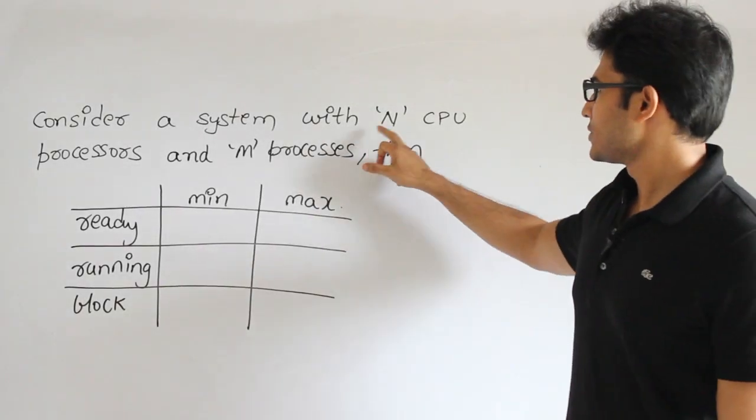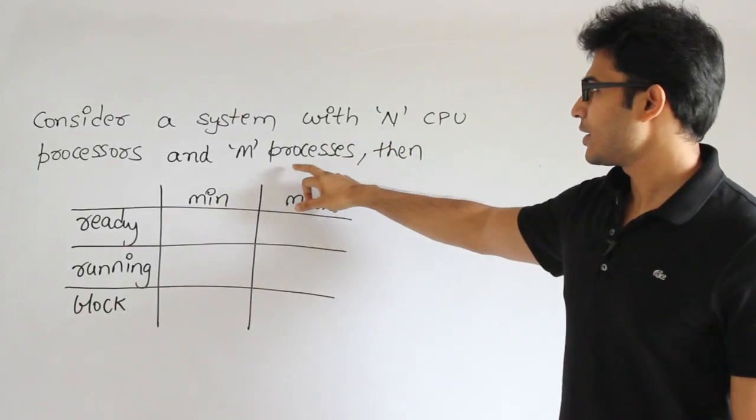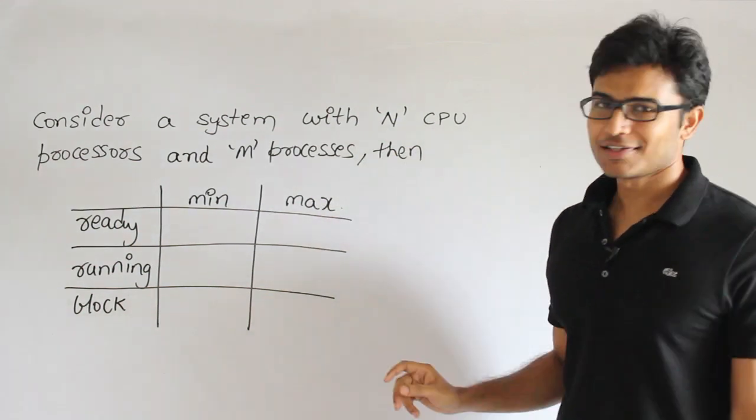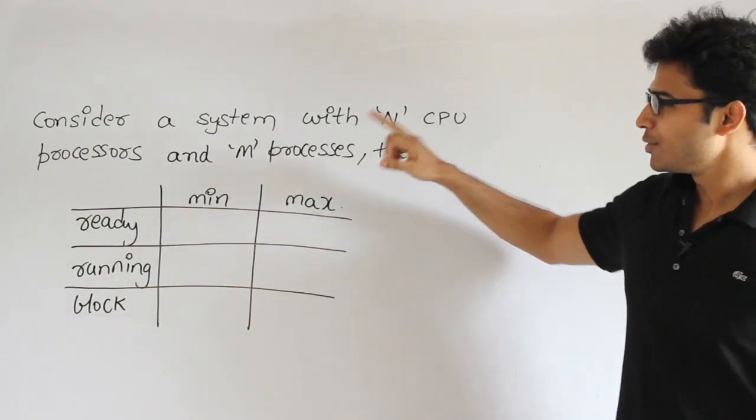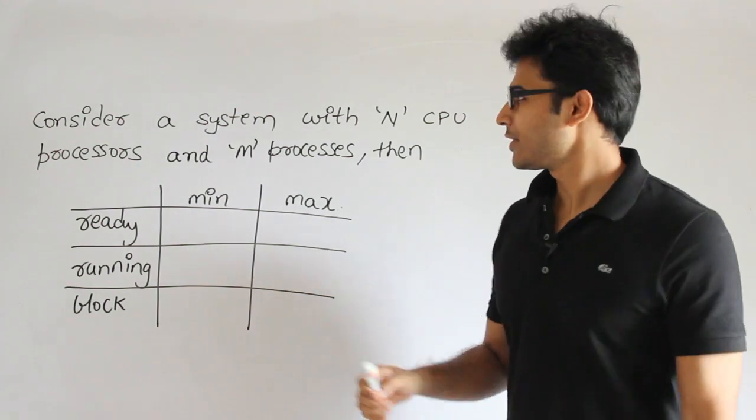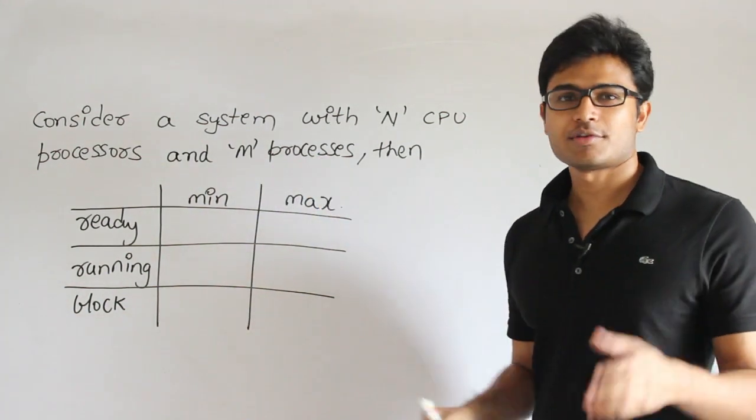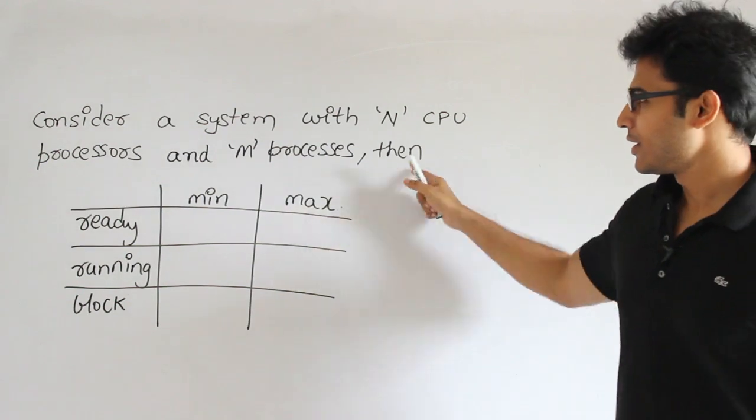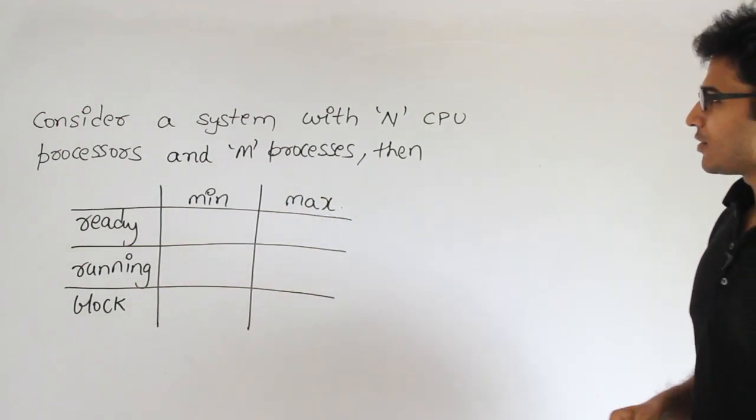Consider a system with n CPU processors and m processes. n processors means the cores, and m processes means the programs.